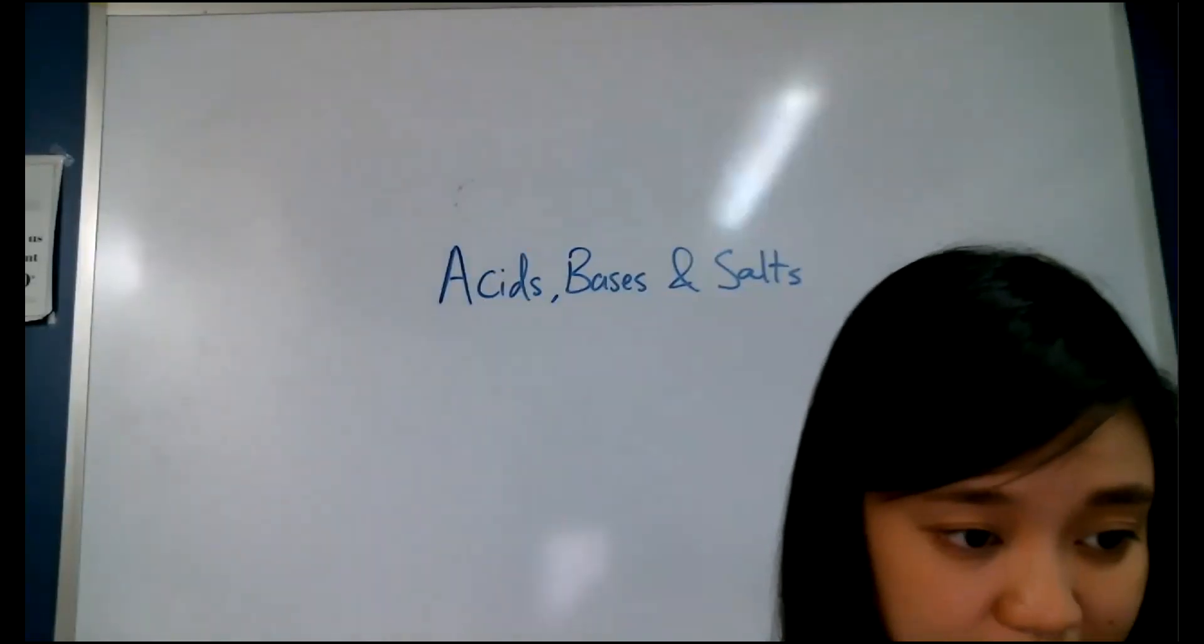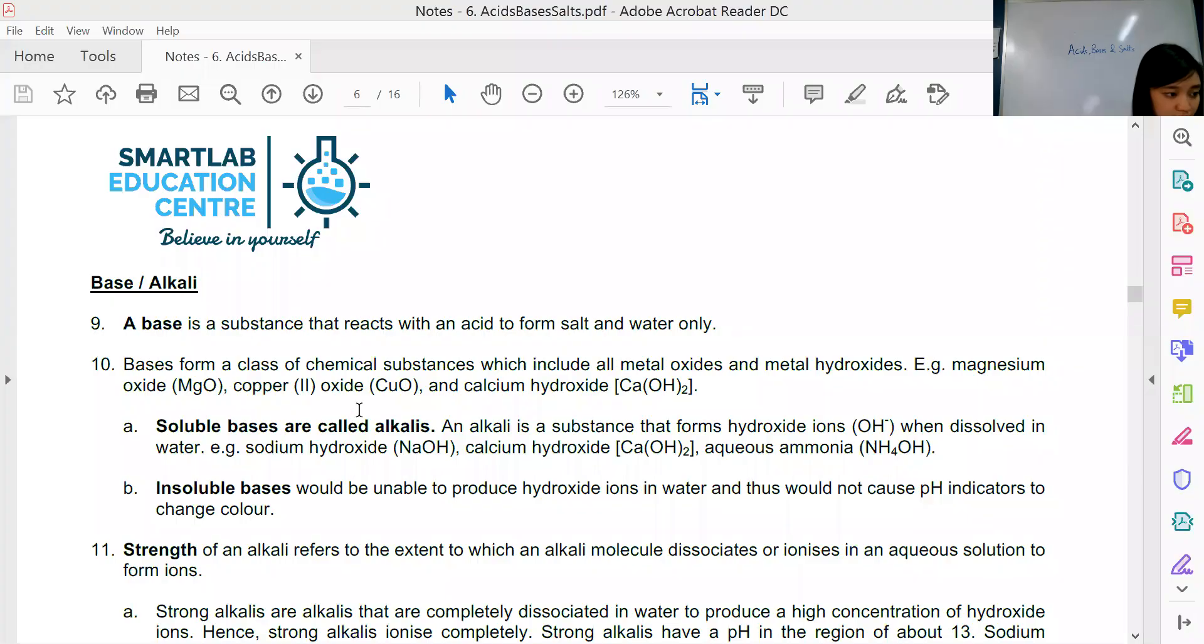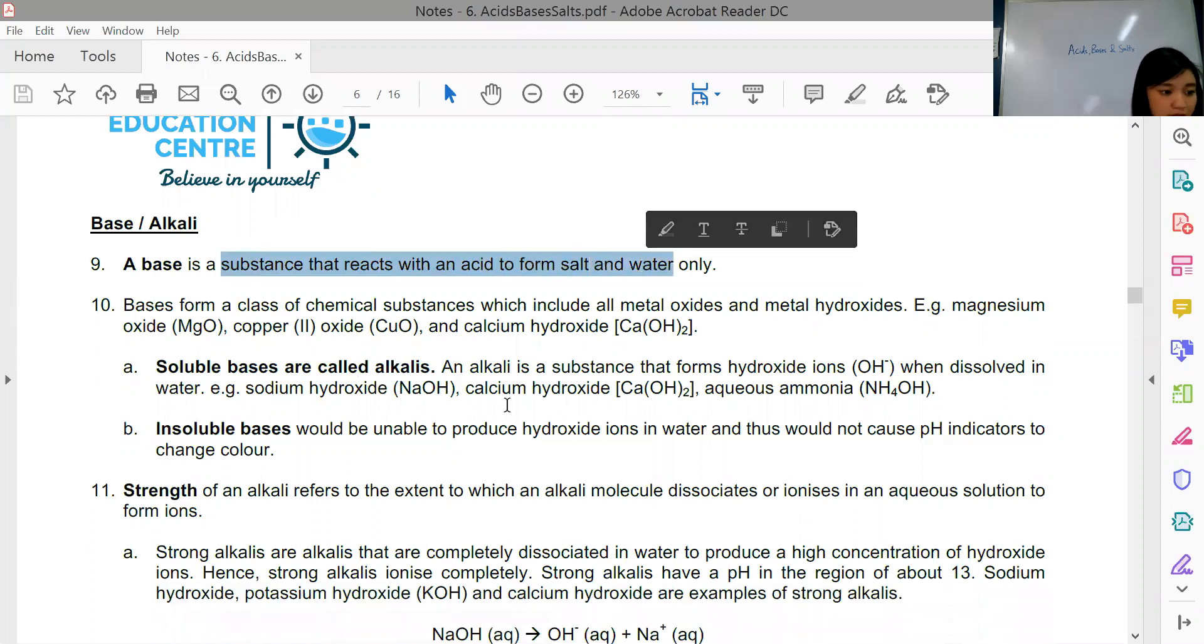Let us look at alkalines now. A base or an alkaline is a substance that reacts with an acid to form salt and water only. Bases form a class of chemical substances which includes metal oxides and metal hydroxides.